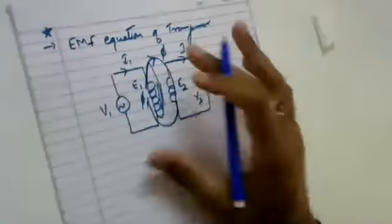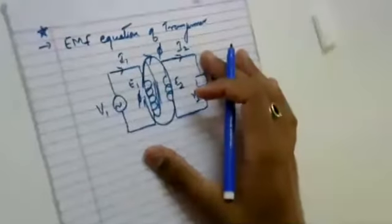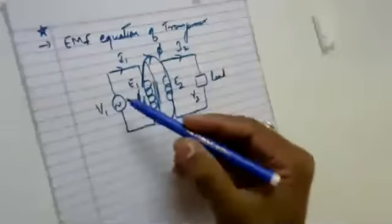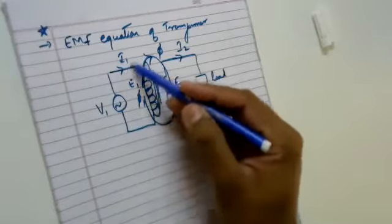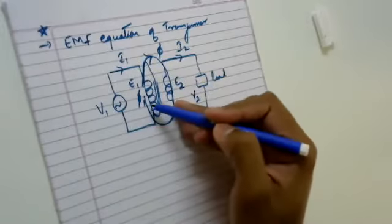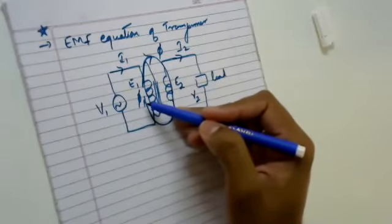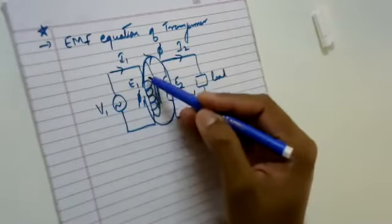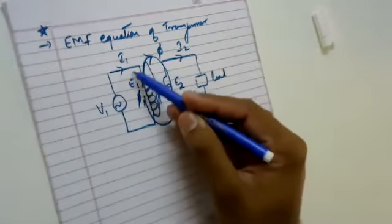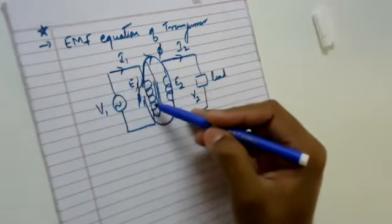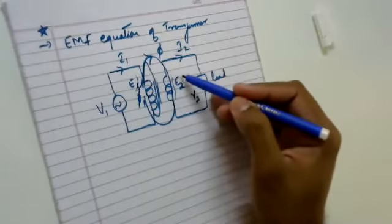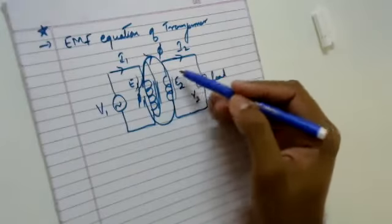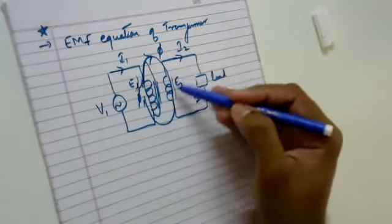When it comes to the EMF equation of a transformer, as we know its working principle: whenever an alternating voltage is applied on the primary winding, an alternating current flows through this winding which produces an alternating flux. When this alternating flux links with the primary coil, it produces a self-induced EMF. When part of this flux links to the secondary winding, it produces a mutually induced EMF, which is also alternating in nature.